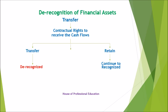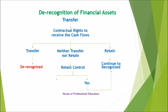If the entity neither transfers nor retains substantially all the risks and rewards of ownership of the financial asset, the entity shall determine whether it has retained control of the financial asset. If yes, it shall continue to recognize the financial asset to the extent of its continuing involvement in the financial asset. If no, it shall de-recognize the financial asset and separately recognize any asset or liability — any right or obligation created or retained in the transfer. If a transferred asset continues to be recognized, the asset and the associated liability shall not be offset. Similarly, the entity shall not offset any income arising from the transferred asset with any expense incurred on the associated liability.